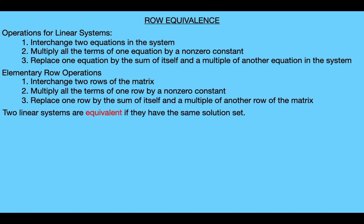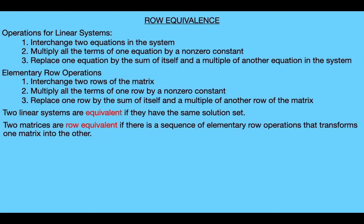Recall that we said two linear systems are equivalent if they have the same solution set. Row equivalence is the analogous notion for matrices. We say that two matrices are row equivalent if there's a sequence of elementary row operations that transforms one matrix into the other.